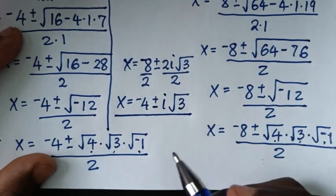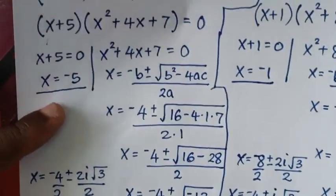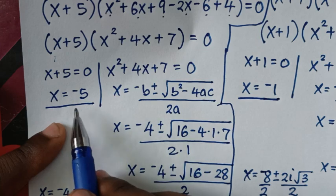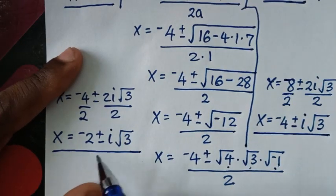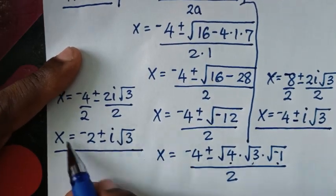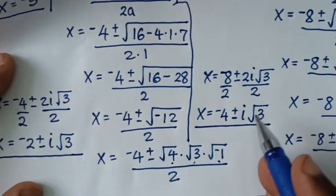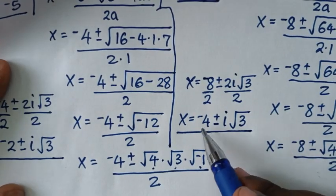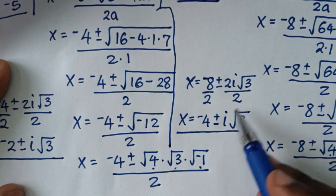Therefore, we have a total of six solutions: real solutions −5 and −1, two complex solutions −2 ± i√3, and two complex solutions −4 ± i√3.